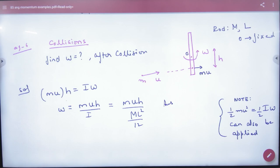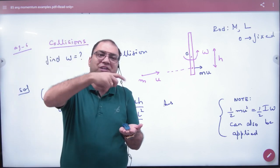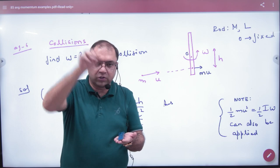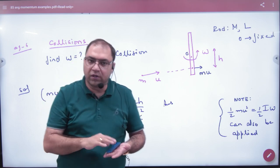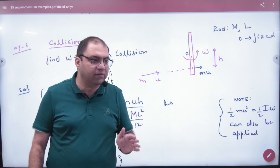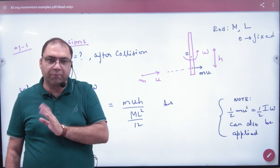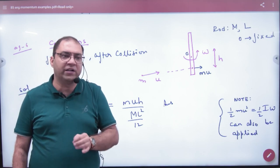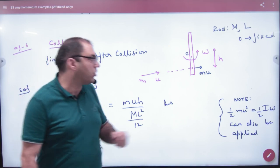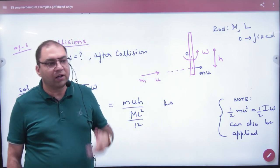Point mass hits it. Remember, after hitting, the rod starts to rotate. The rod rotates with omega. So you have to find what omega will be. This is basically the concept of collision. The problem is there will not be linear momentum conservation because the rod will be at rest. What will happen? It will be angular momentum.